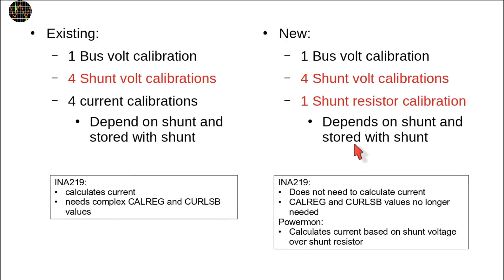The consequence is that the INA219's current calculation is actually no longer used. This means you could leave the complex calrec and curlsb calculations for the caldata.txt file at zero. I don't recommend going that far because who knows if there are any side effects of leaving these zero.